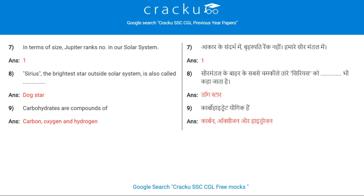In terms of size, Jupiter ranks number 1 in our solar system. Sirius, the brightest star outside the solar system, is also called the dog star.